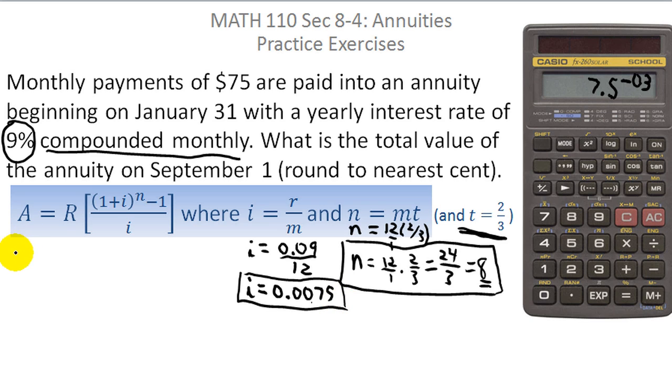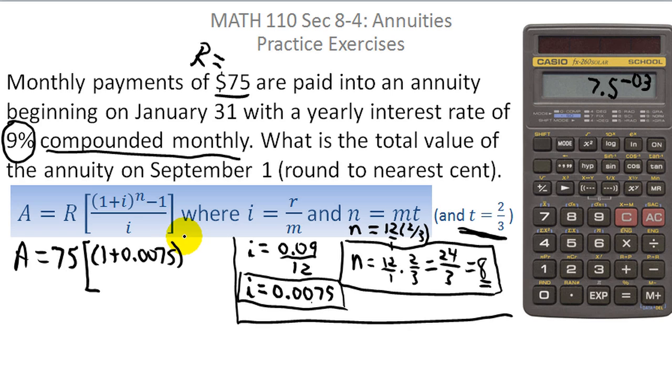Now we need to plug into the formula. So we now know that A is equal to R. Okay, what is R? R is the periodic payment. All right, that's how much you put in per period. And the problem tells us that we make monthly payments of $75. So R is 75. And I have 1 plus i. Well, I calculated i. So that's 1 plus 0.0075 raised to the n power, which I now know is 8 because I calculated that, minus 1, all that over i, which is 0.0075.